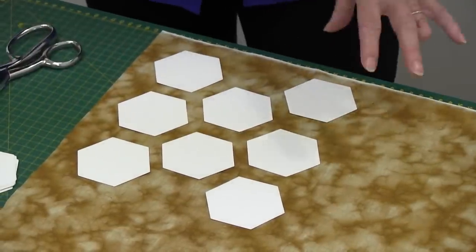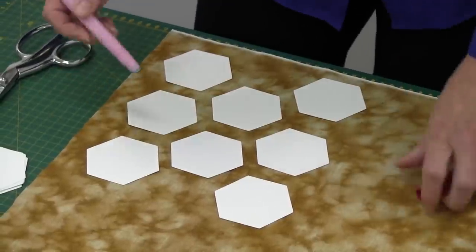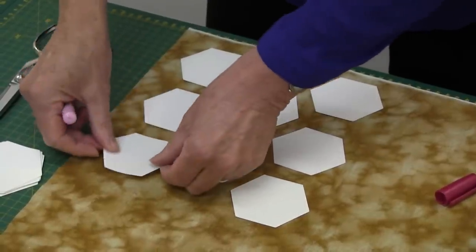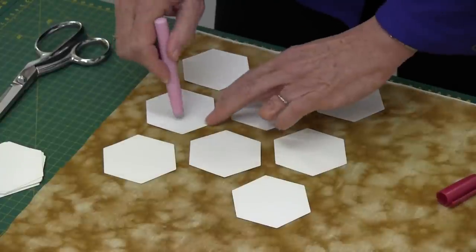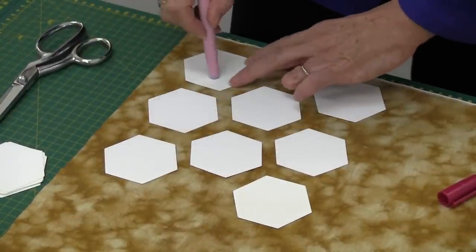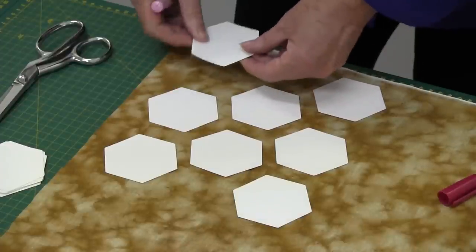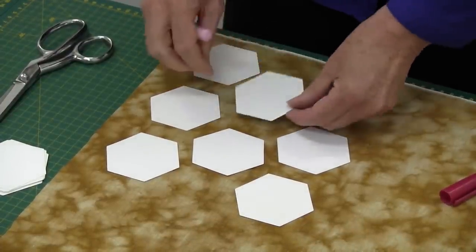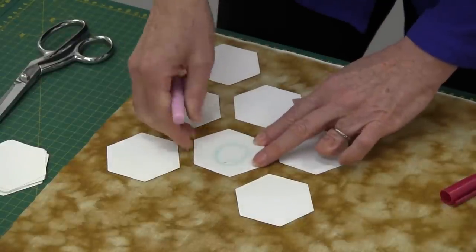When you are satisfied in that honeycomb effect that you have, take a fabric glue pen and place some glue on the back of the paper. Turn it over and press it against the back of the fabric. Keep going until you have all your papers in position.